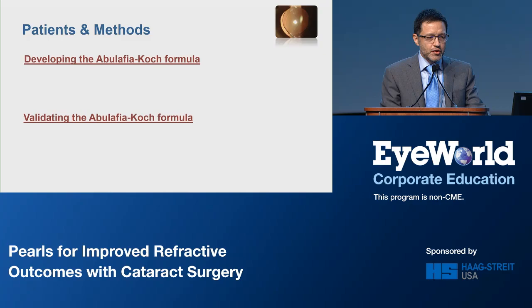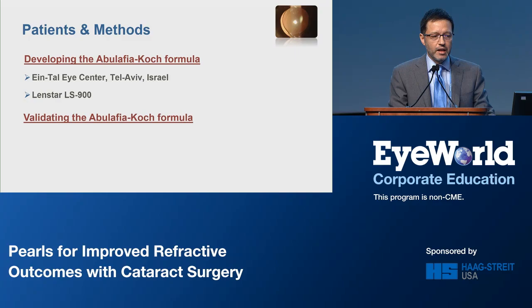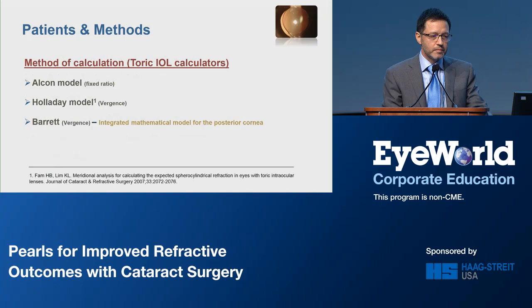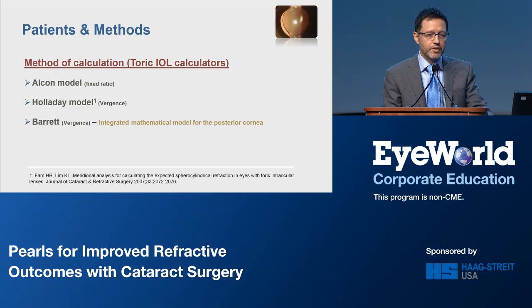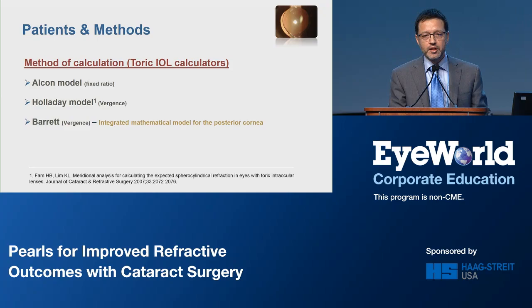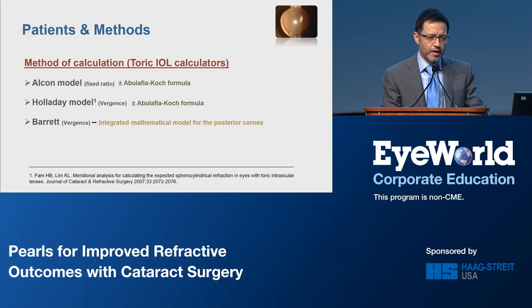For developing the formula, we used LENSTAR measurements from the Eintal Eye Center in Tel Aviv, Israel. For validating it, we used the IOL Master 500 measurements from the Lion Eye Institute in Western Australia. For the method of calculation, we compared the Alcon model, which used a fixed ratio to calculate the estimated toricity at the corneal plane, and the Holladay and Barrett calculators, which used the effective lens position for the same purpose. Both the Alcon and Holladay models were evaluated with or without the adjustments of the Abulafia-Koch formula.